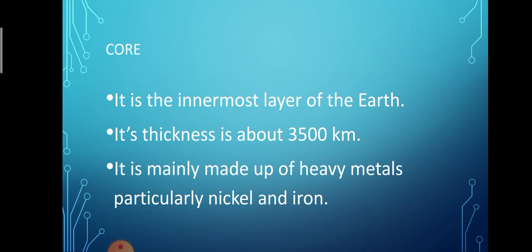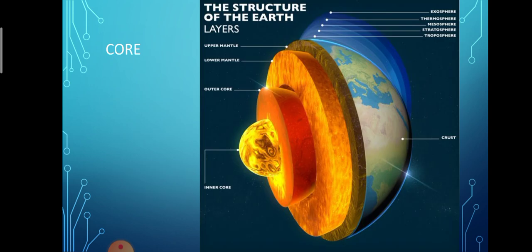The temperature of the core ranges between 3000°C to 6000°C. Besides such high temperature, the core is also subject to extremely high pressure. The metallic nature of the core lends magnetic properties to the earth. The core has two layers: the solid inner core and the liquid outer core. The outer core comprises semi-solid rocks and the inner core is solid.